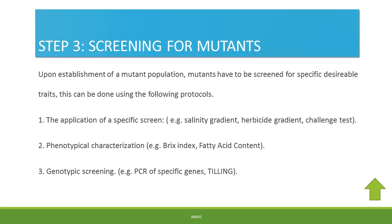Upon establishment of a mutant population, mutants have to be screened for specific traits using a specific screen. For instance, if you are screening for salt-tolerant varieties of rice, you may apply a salinity gradient; if screening for herbicide tolerance, you may apply a herbicide gradient. You may also incorporate a challenge test involving insects, bacteria, or other pathogens. Phenotypical characterization can be done using the BRIX index for fruits or fatty acid content for oilseeds.